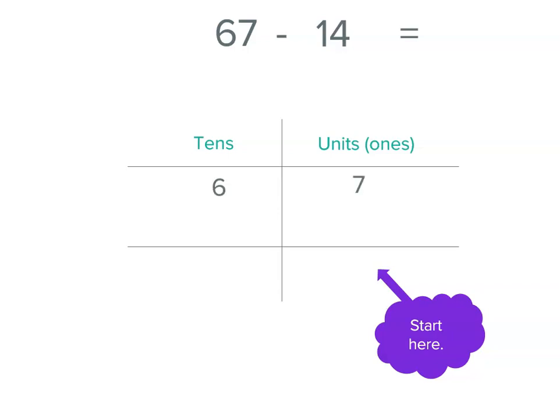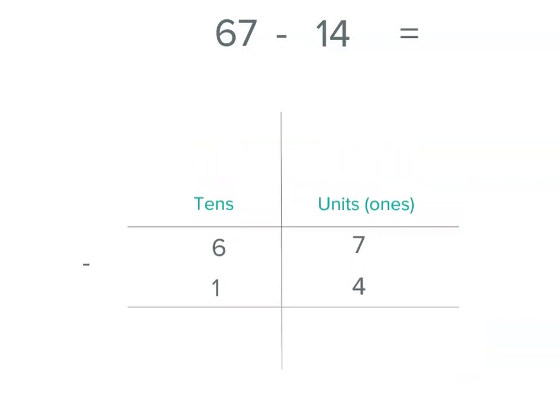We've got 67, which is 6 tens and 7 units. And we're subtracting 14, which is 1 ten and 4 units. So if we start at our units place, oh,